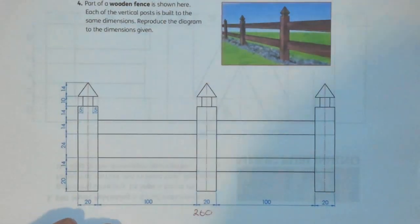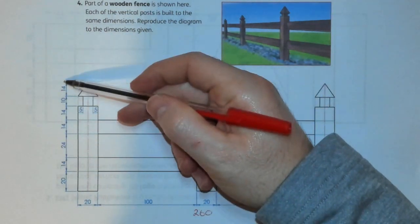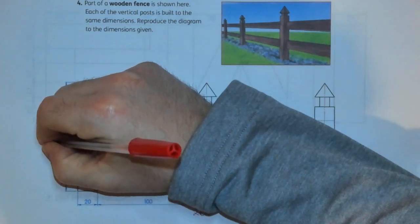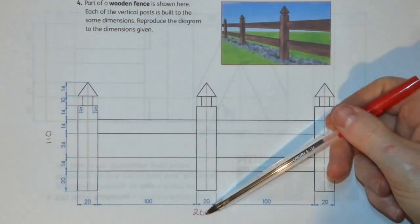So straight away I need to make a box, construction lines used, 260 by 110. That's what I'm going to start with first.